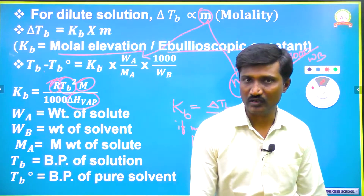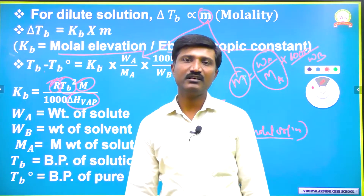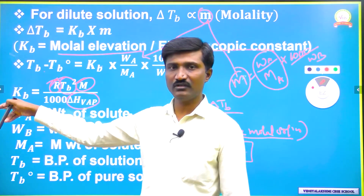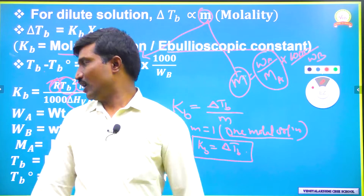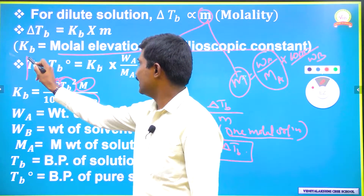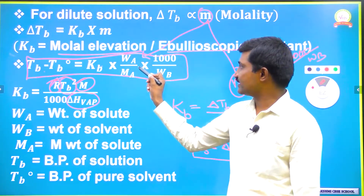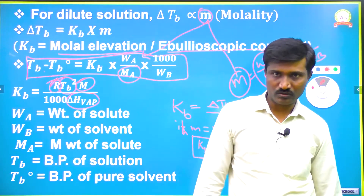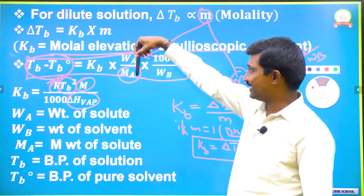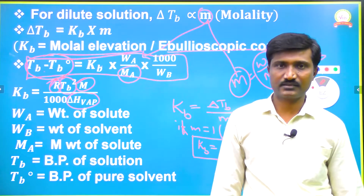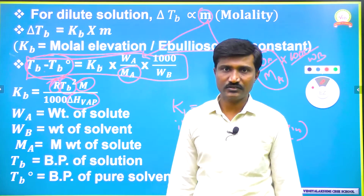KB depends on the nature of the solvent. If the solvent changes then KB changes, because M is the molar mass of the solvent and when the solvent changes, molar mass changes, so KB automatically changes. From the equation delta TB = Kb × (W / Ma) × (1000 / WB), where MA is the molar mass of the solute, we can say that elevation in boiling point is inversely proportional to the molar mass of solute.